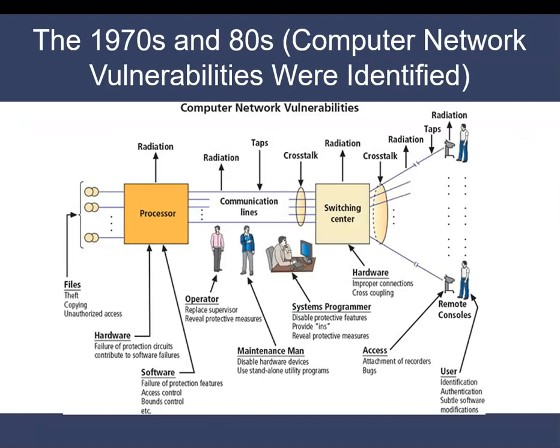In the 70s and 80s, ARPANET grew in popularity and use, which created a potential for misuse of the system. Fundamental problems with ARPANET security were identified, such as individual remote user sites did not have sufficient controls and safeguards to protect data against unauthorized remote users. There were no safety procedures for dial-up connections to ARPANET, and user identification and authorization to the system were nonexistent, so anyone could actually get into the system and get the information they needed.